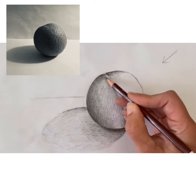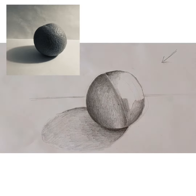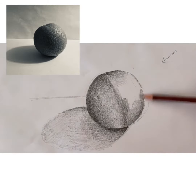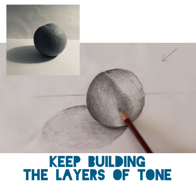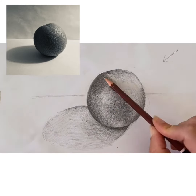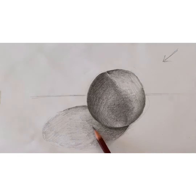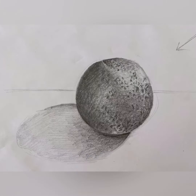Now work into the side facing the light. Start lightening and gradually build up your tone, using lines which follow the curves. Lastly, start to add some mark making to show the texture of the skin.